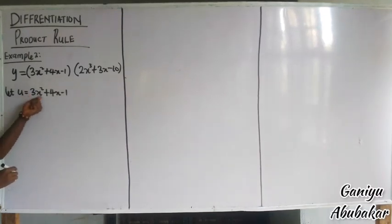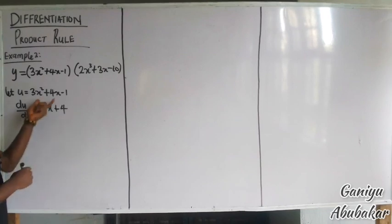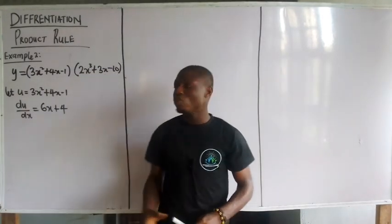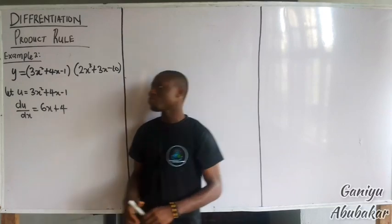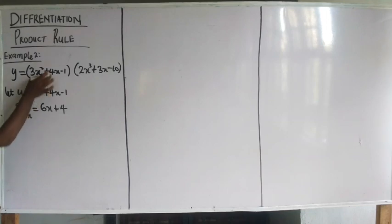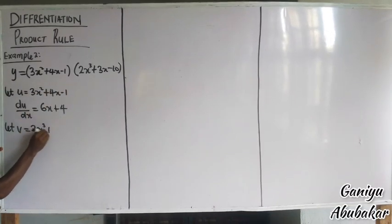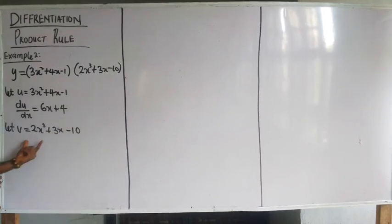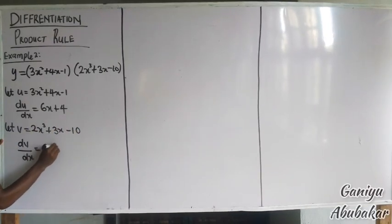If I differentiate u with respect to x, I will have du/dx equal to 6x + 4. If you don't know how to differentiate this, I will drop the link in the description of this video. If I differentiate v with respect to x, I will have dv/dx equal to 6x² + 3.